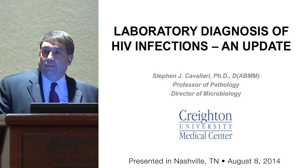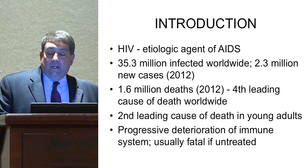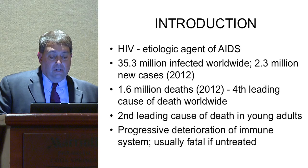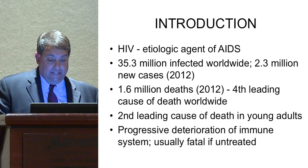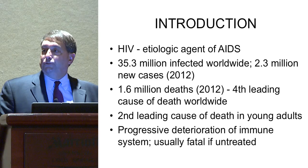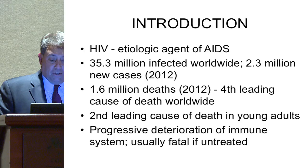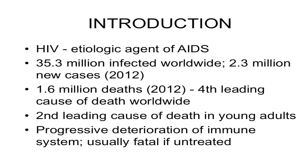Today we're going to talk about HIV infections and laboratory diagnosis. A little bit has changed in this area. I want to give a refresher background on HIV, some of the epidemiology and characteristics. HIV is the etiologic agent of AIDS. 35.3 million cases worldwide; 2.3 million new cases in 2012, with 1.6 million deaths that year. It's the fourth leading cause of death worldwide and the second leading cause of death in young adults — and remember, young adults are not supposed to die. The disease itself is a progressive deterioration of the immune system and is usually fatal if untreated.